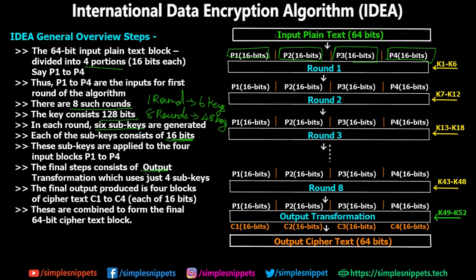The final step consists of output transformation, which again uses 4 more sub-keys of 16 bits each. So starting from round 1 through round 8, and after that we have one last process — output transformation — which again uses 4 sub-keys. Then we get the ciphertext C1, C2, C3, C4, each 16 bits long, and we combine them to get the output ciphertext of 64 bits.